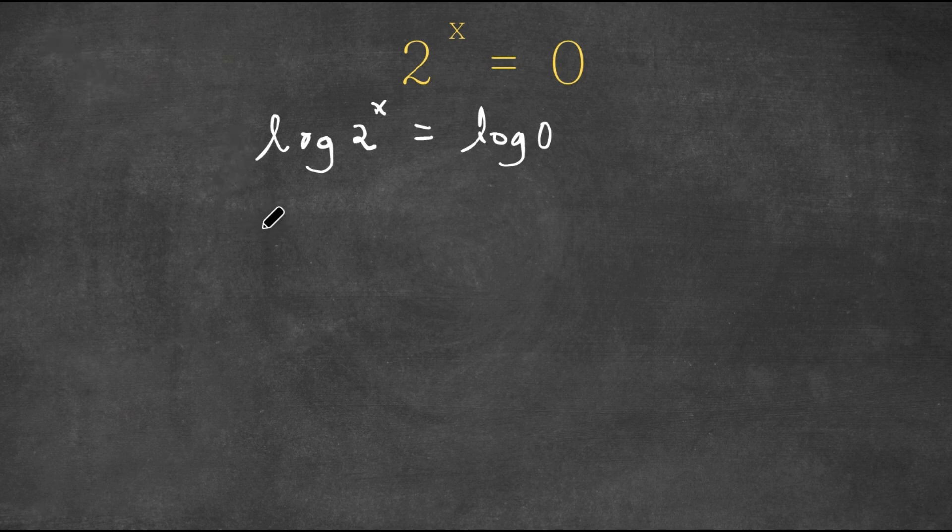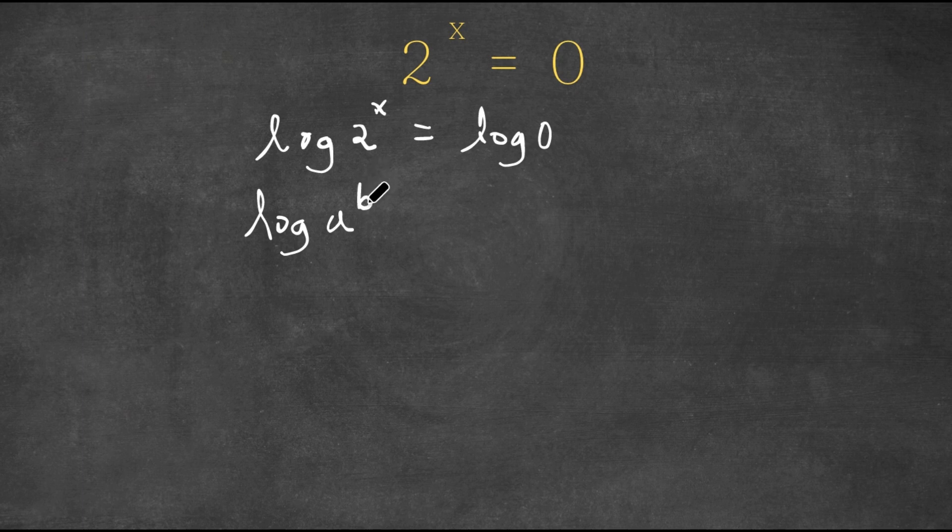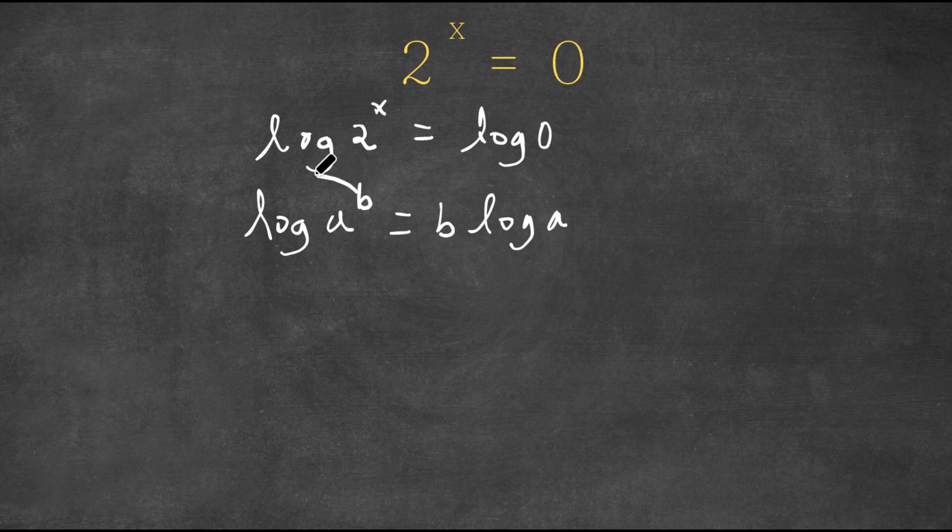Now if I have something in the form log a to the power of b, this is equal to b times log a, because I can move the exponent to the front of the logarithm.